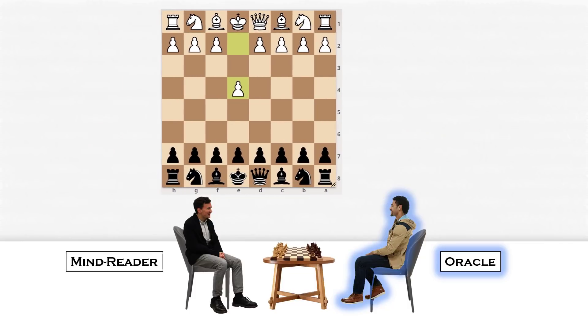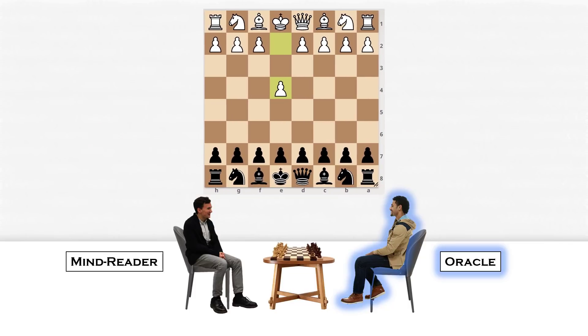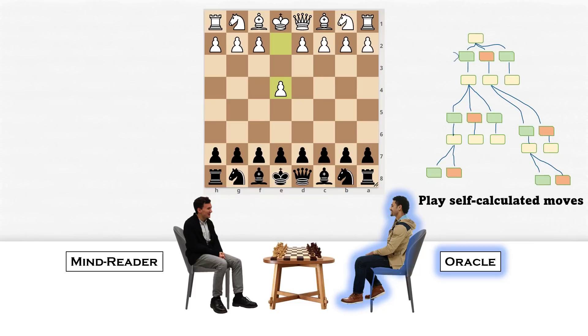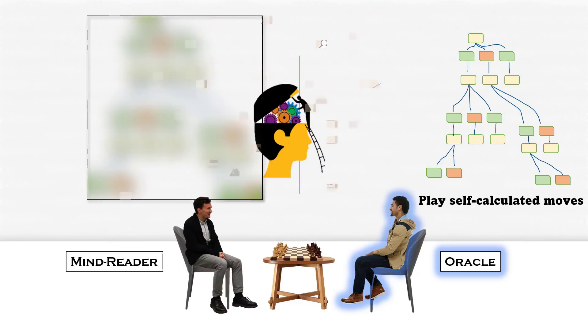And now the Oracle has to play a move, and he himself has to decide the best move from his own calculation. Because he cannot read the calculation in the mind of his opponent, so he won't be able to see the best move from the perspective of his opponent.